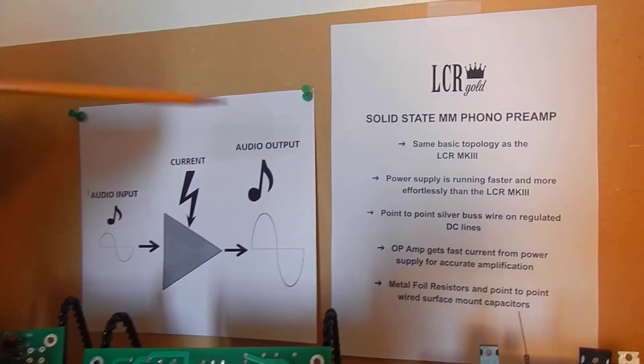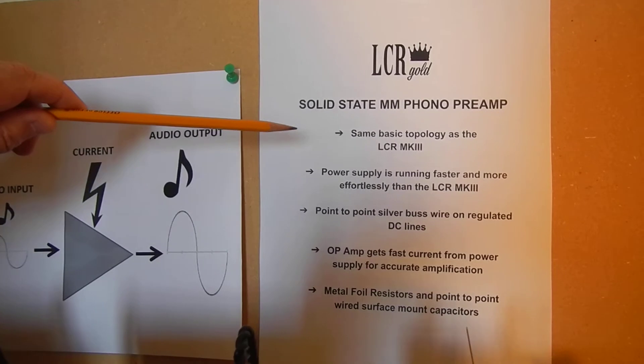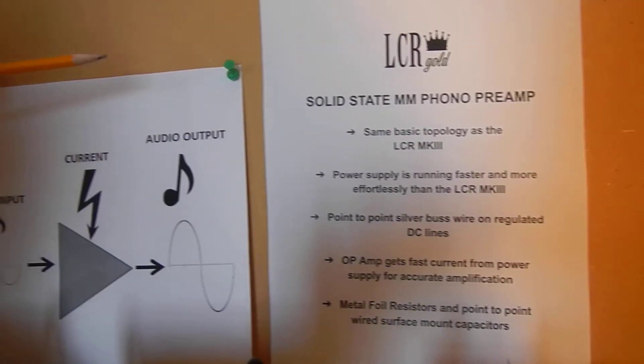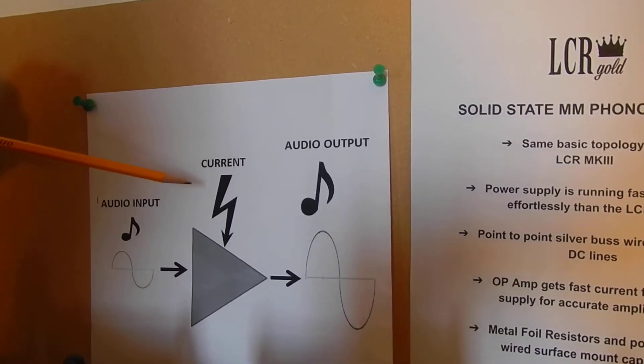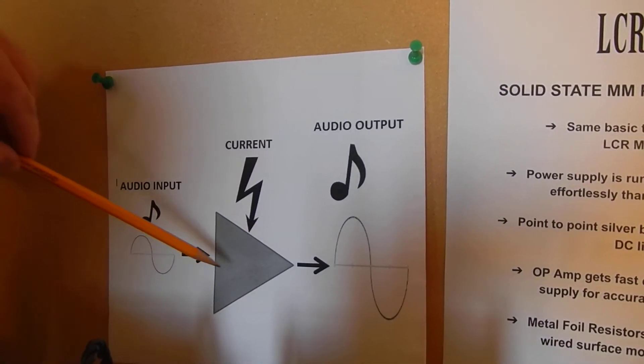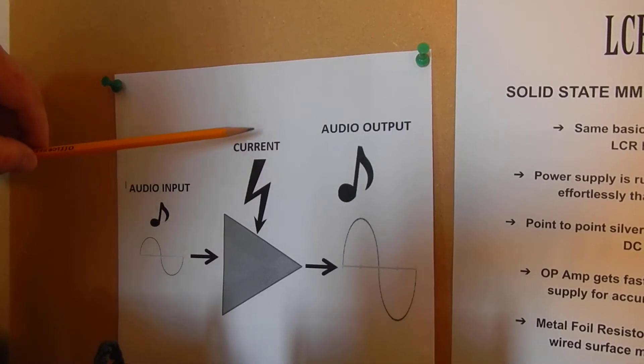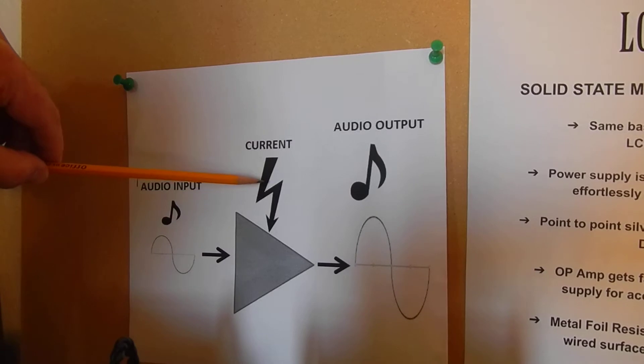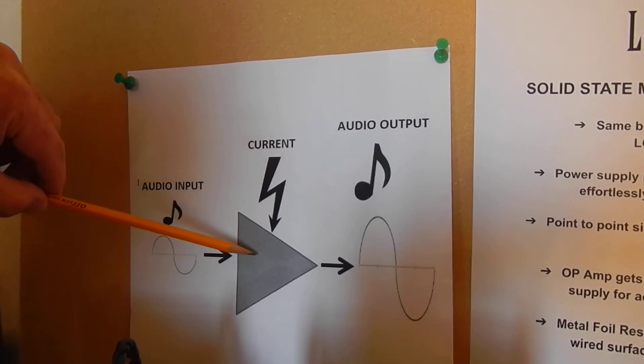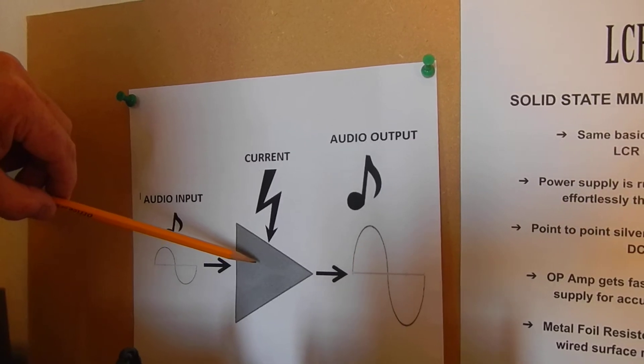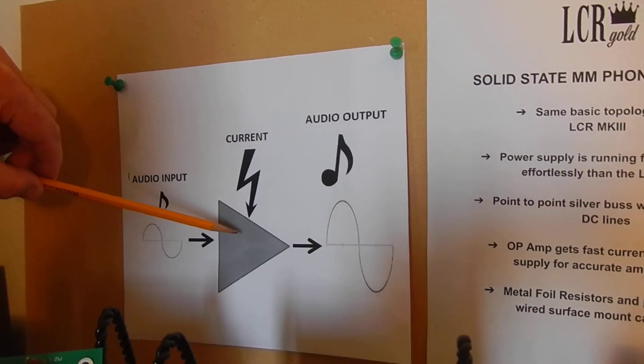The LCR Mark III is the same basic topology as the LCR Gold. The topology relies on a high-speed video op-amp that amplifies the audio signal. The main determiner of quality in the circuit is the delivery of current from the power supply to the op-amp. So how did we get faster delivery of current to the op-amp for the LCR Gold?